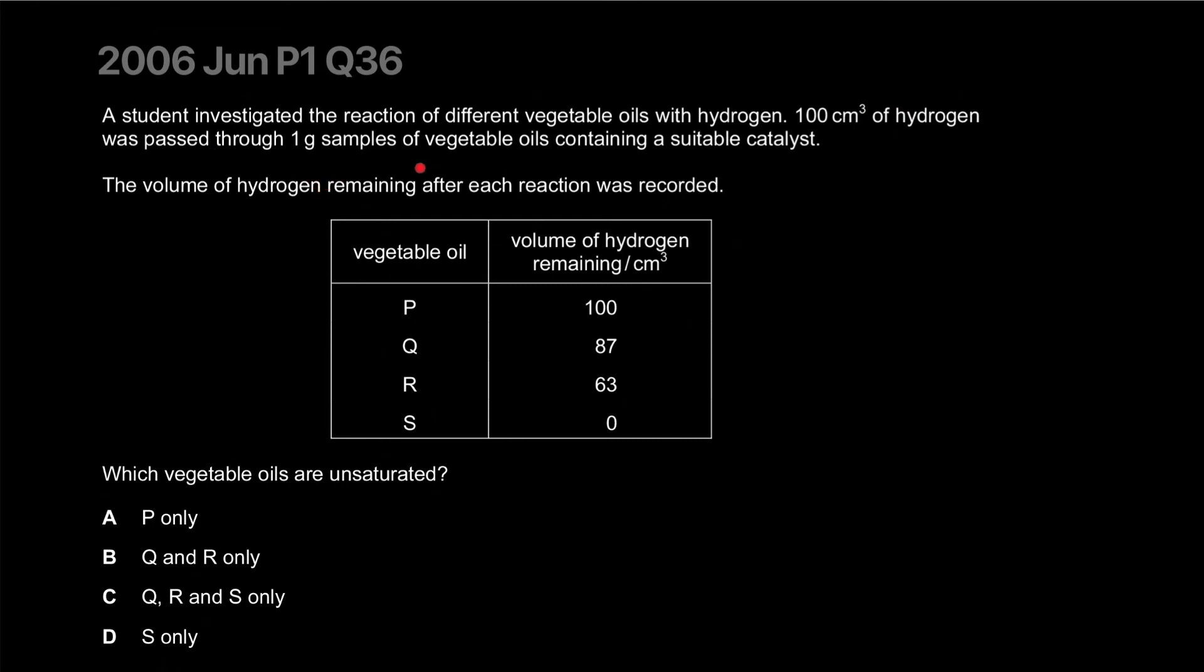A student investigates the reaction of different vegetable oils with hydrogen. A hundred centimeter cube of hydrogen was passed through one gram samples of vegetable oils containing a suitable catalyst. So they're undergoing hydrogenation, they're being reduced. The volume of hydrogen remaining after each reaction was recorded. So P didn't react at all whereas everyone else did, and S was like hungry boy, hungry hippo.